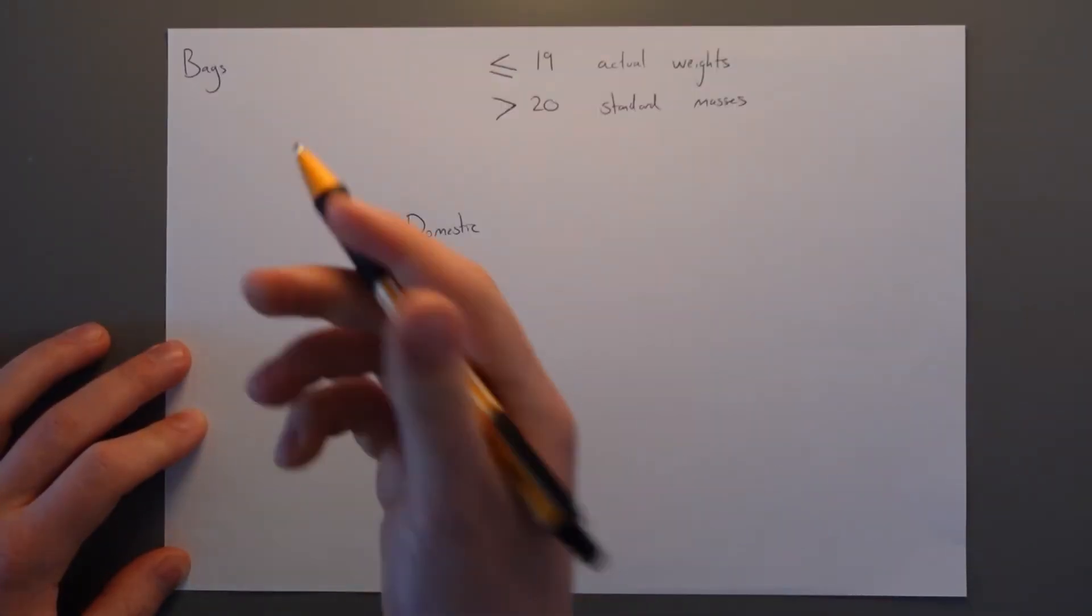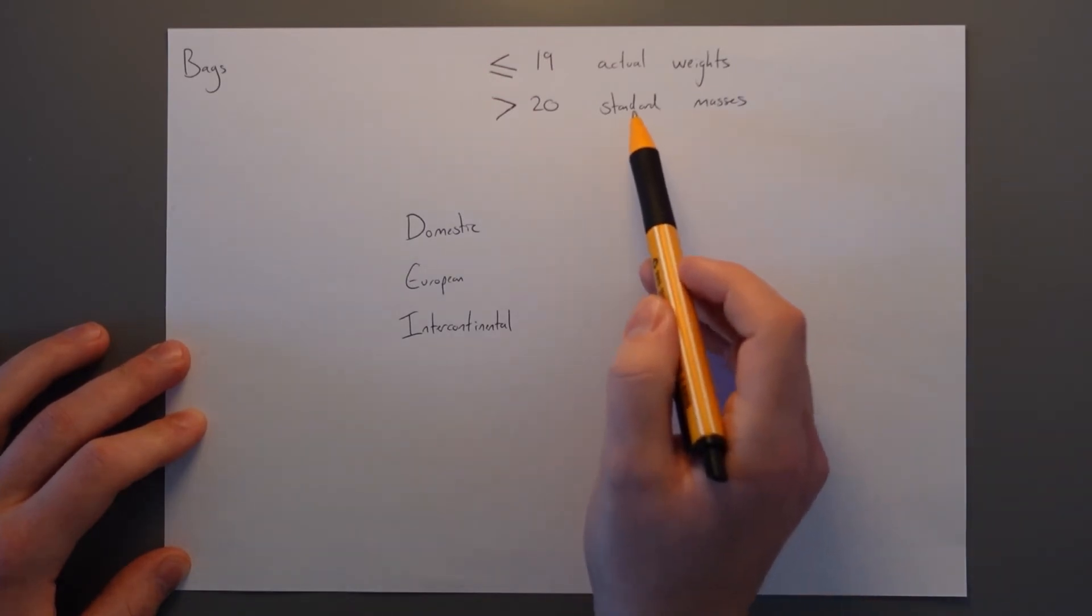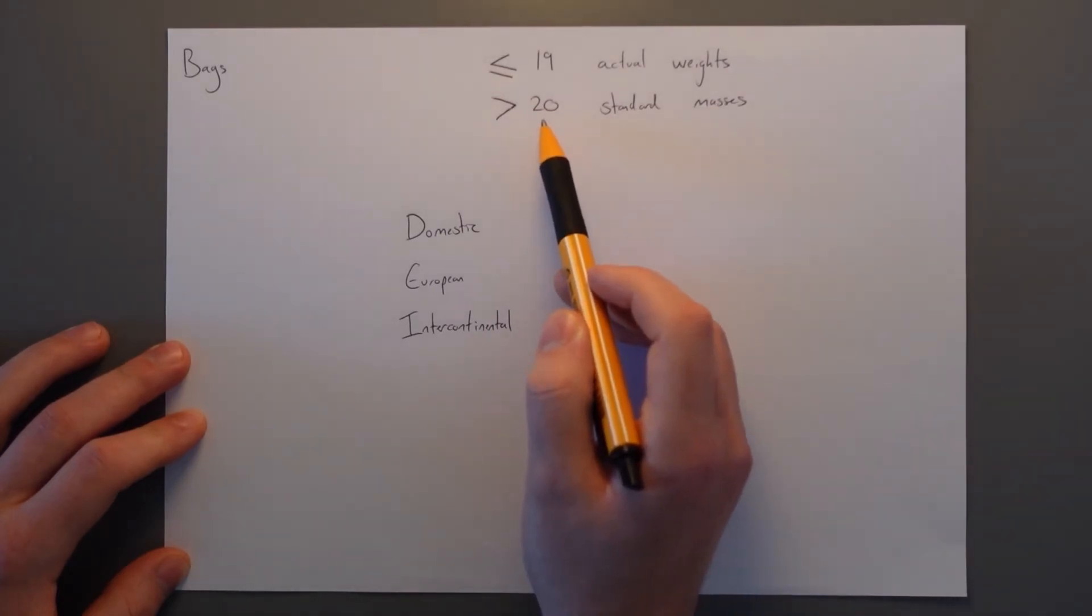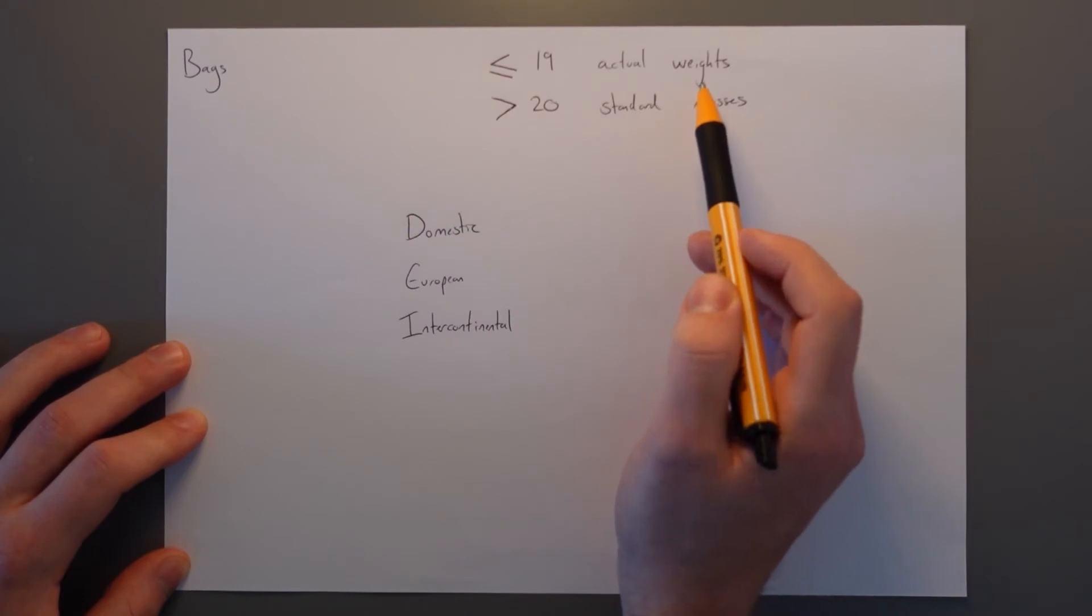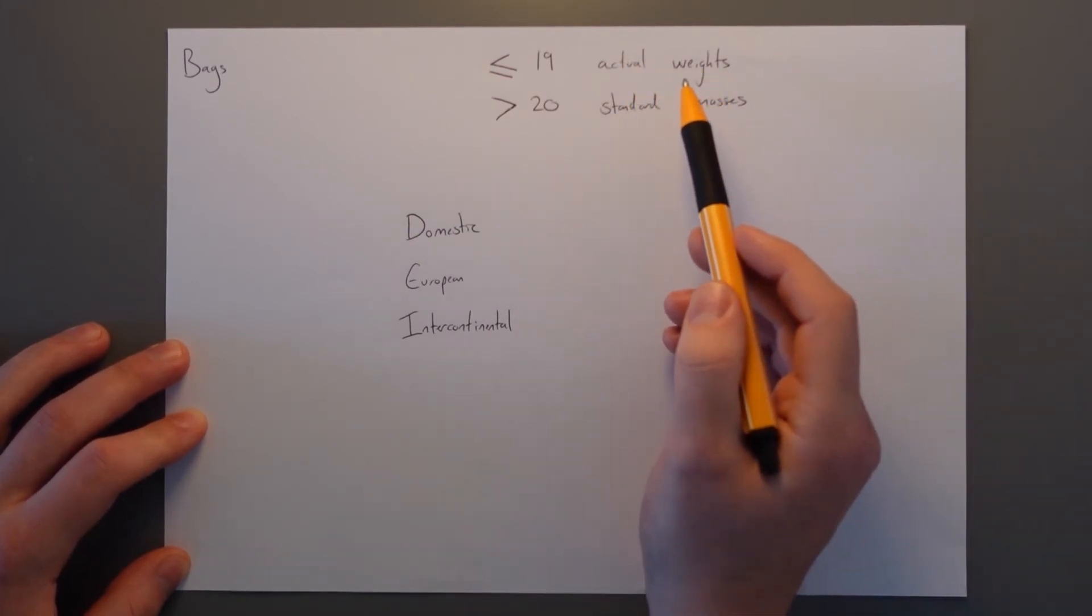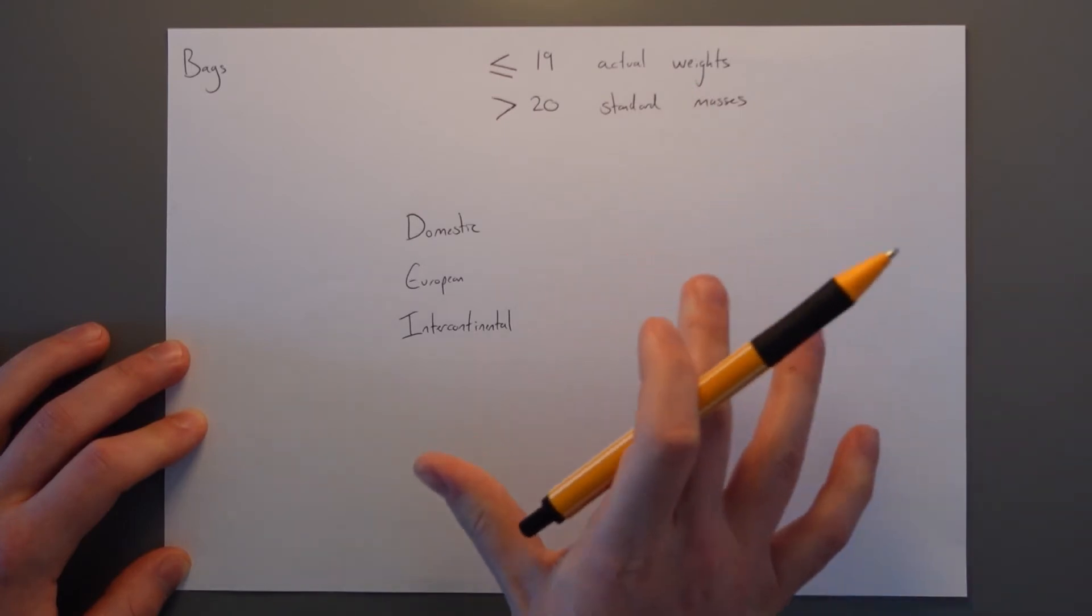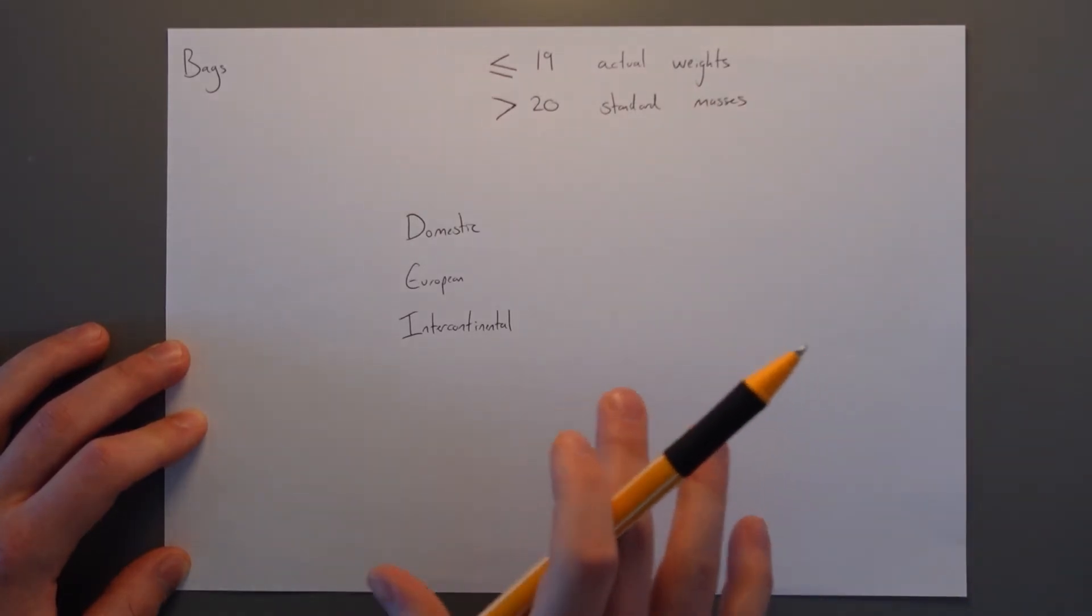So people, crew, next up is bags. Standard masses for bags could only be used on aircraft with more than 20 seats. If it's 19 or fewer seats, you have to actually weigh the bags, but you will find most airlines actually weigh the bags because it gives you a more accurate figure and you could optimize your performance and get away with burning less fuel.